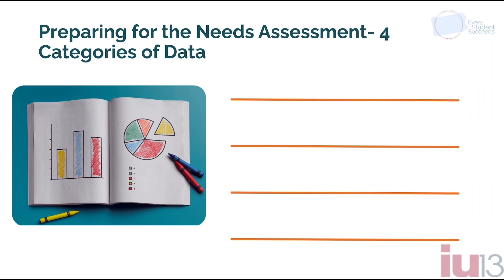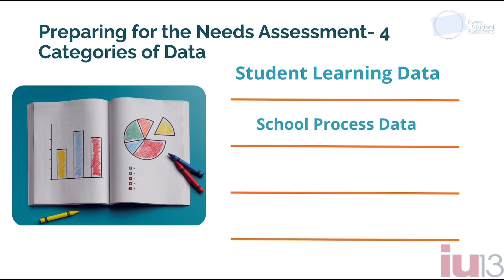As you review school level plans, you'll want to look for evidence that data from each of four categories was collected and analyzed. First, student learning — how are our students doing? Are we meeting the needs of all learners? Then, school process data — what are our processes? This data tells us about the programs and processes that produce the school and classroom results we're seeing. It's actually the only measure over which we have almost complete control.